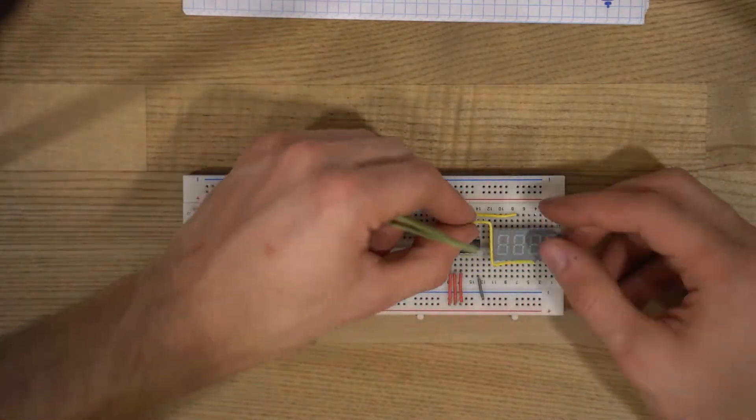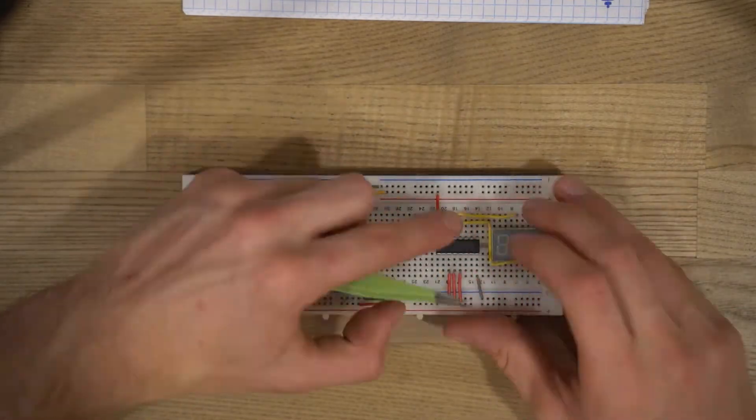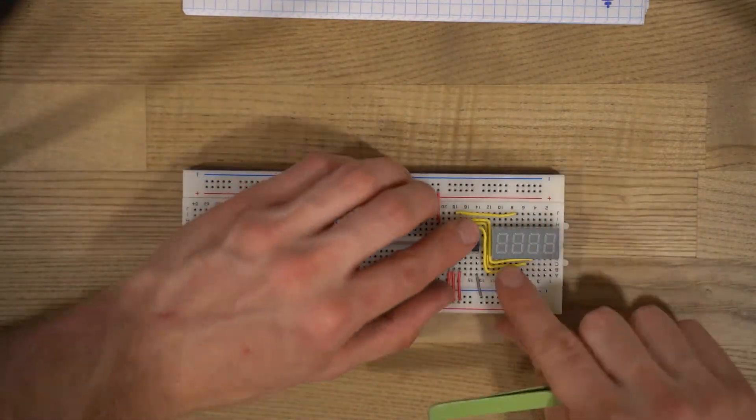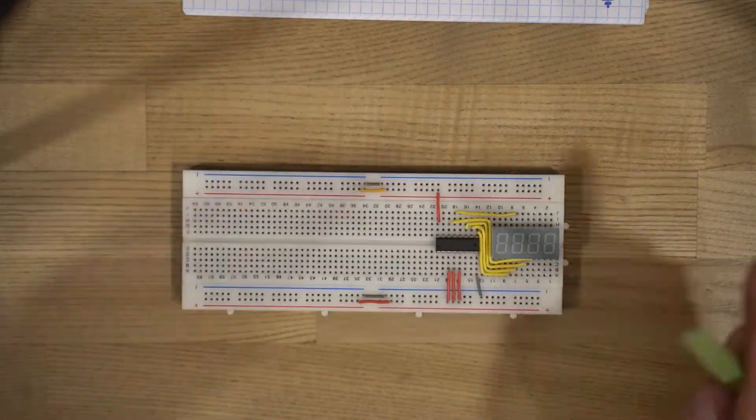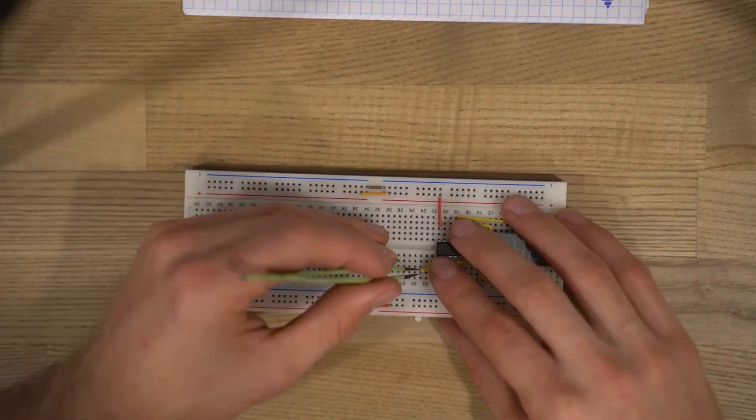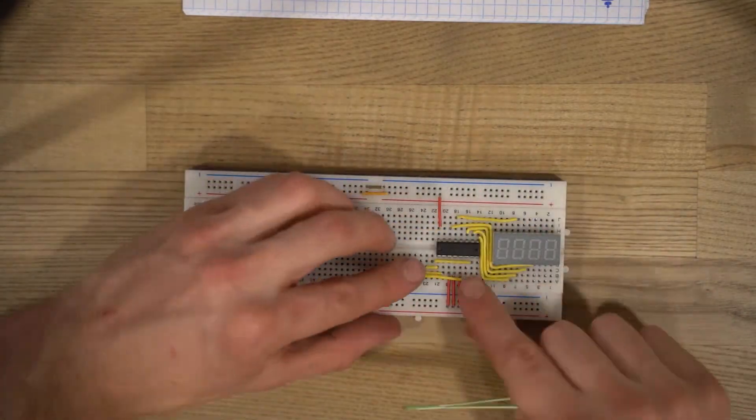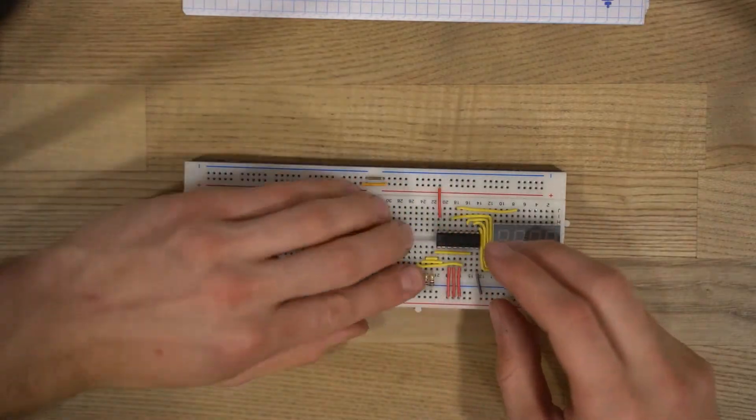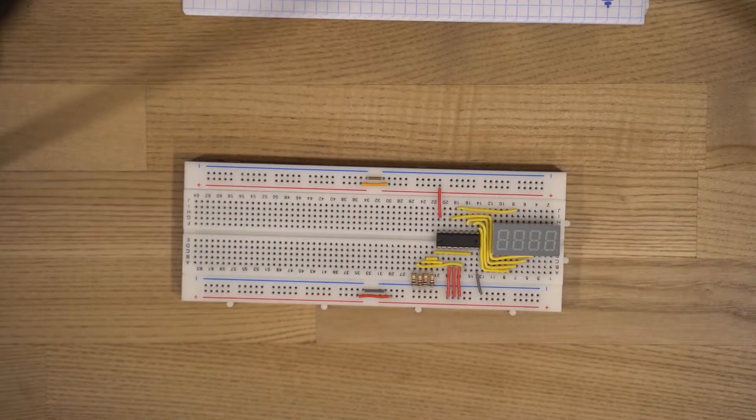The yellow wires will connect the 7-segment decoder and the display, later I will put some orange wires to connect the multiplexer. And this is pretty much what we need at the beginning. This circuit would perfectly work but now we will start improving it.